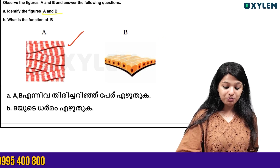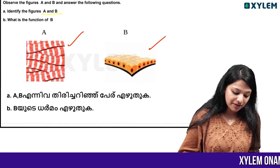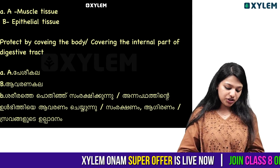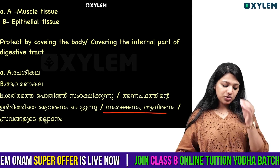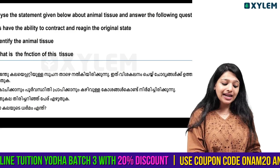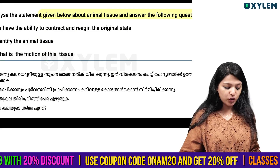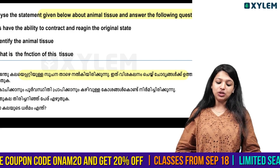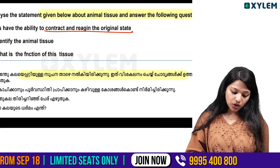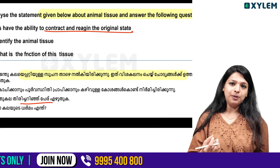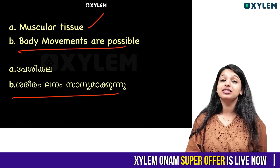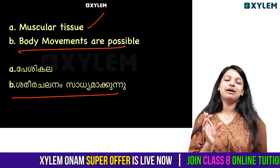It is a muscle tissue; the epithelial tissue has a specific function. It is a function of the epithelial tissue. It is a function of the muscle tissue. Analyze statements about animal tissue. To be found in the original state is a function of epithelial tissue. Body movements are possible — this is the muscle tissue.